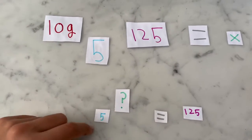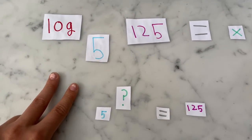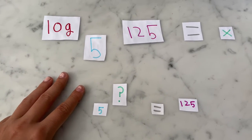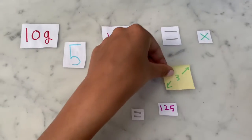Well, we know that 5 times 5 is 25, and 25 times 5 is 125. So x is 3.